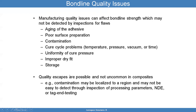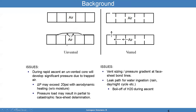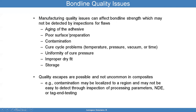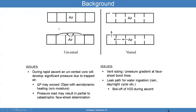Say you have contamination — maybe somebody dropped a chip of paint, and now you have an initial delamination. Contamination can be an issue and that might not be very easy to detect through inspection of processing parameters. You have to pay attention to that when dealing with unvented honeycomb structures, because now you have an additional loading configuration that was not present in the vented configuration.